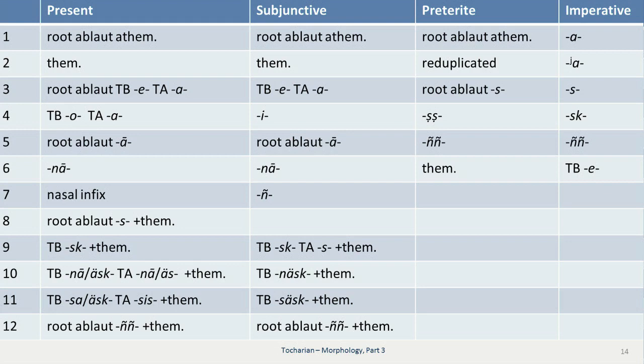And if we take a quick look at our preterite classes: class one has root ablaut and is athematic. Then class two is the place where we find reduplication in the Tocharian verbal system, and also the reduplication is also attested in the participles of these preterites. Then class three has root ablaut and an s-suffix. Preterite class four has a ṣṣ as suffix. Preterite class five has -nu as suffix, and preterite class six is an athematic preterite class.